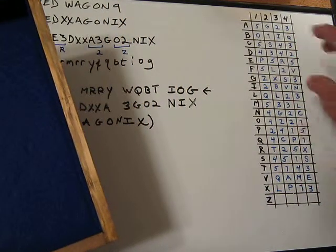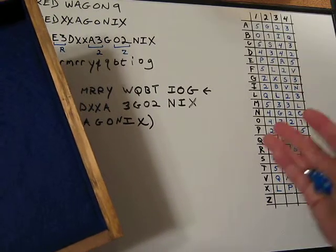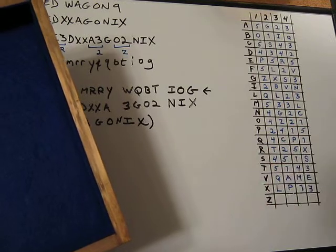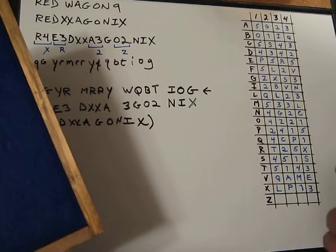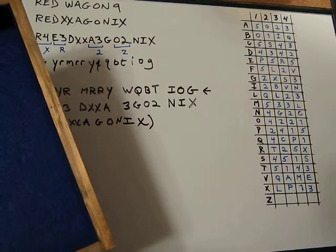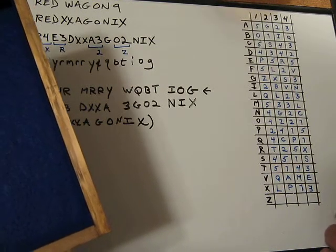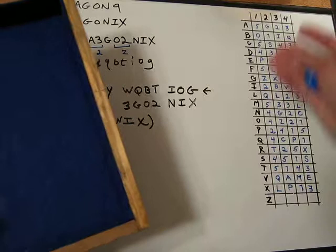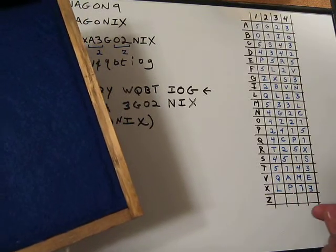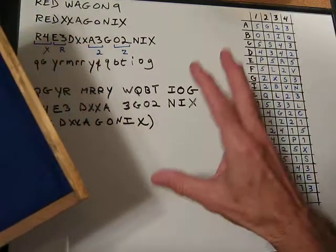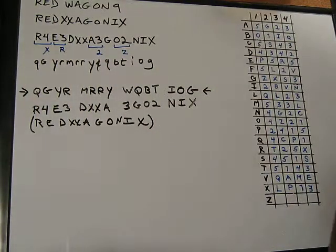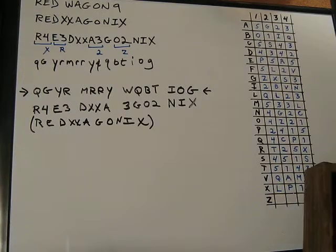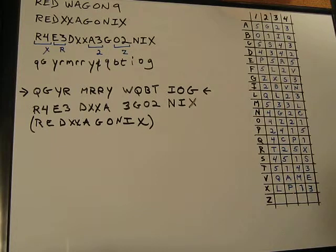This does not have to be your only chart. You can have different ones, which you reference using a codebook entry. In other words, you start off your cipher message with something like CB41, and they look up CB41, go to that page, and see this chart. This type of thing really makes the cipher much more difficult to solve — I think it's enough to give most cryptanalysts kittens, and it brings it to a whole new level of complexity and security.